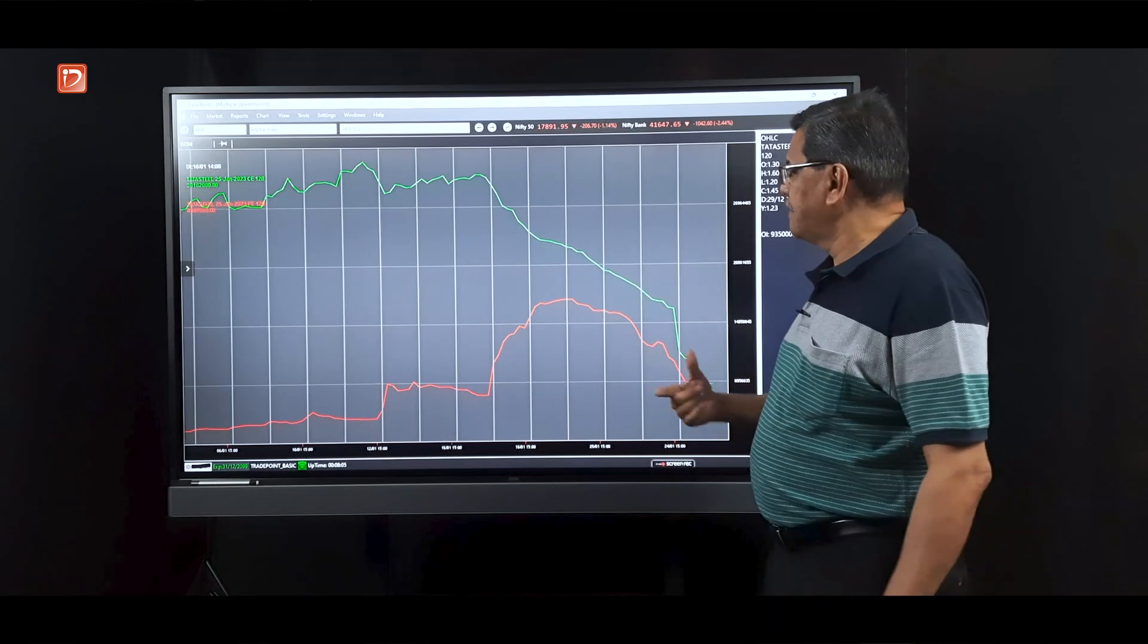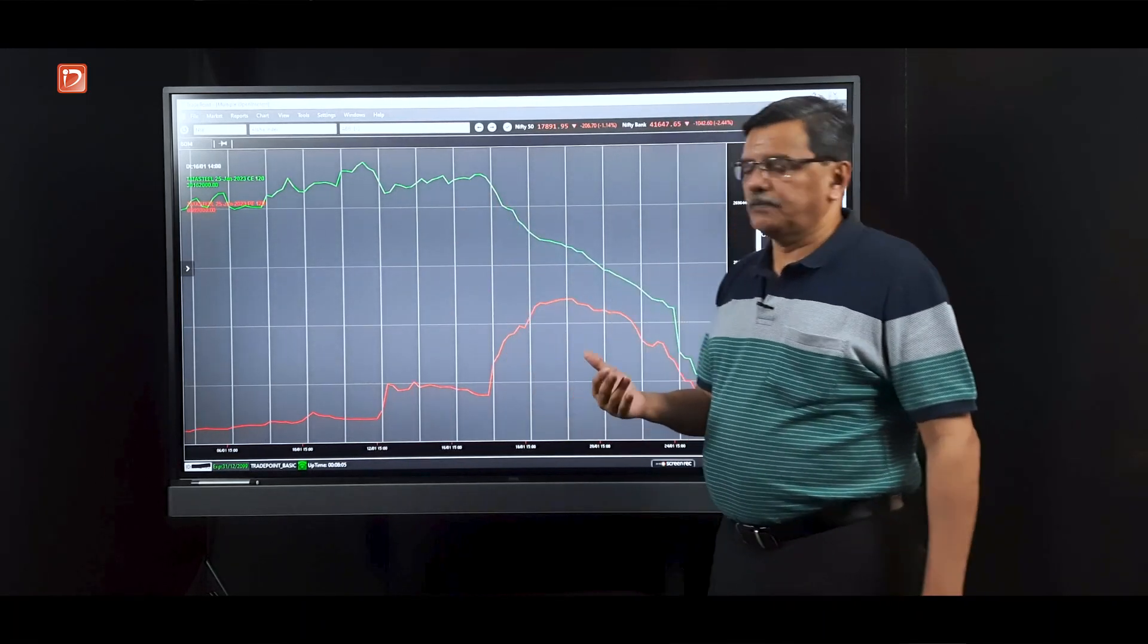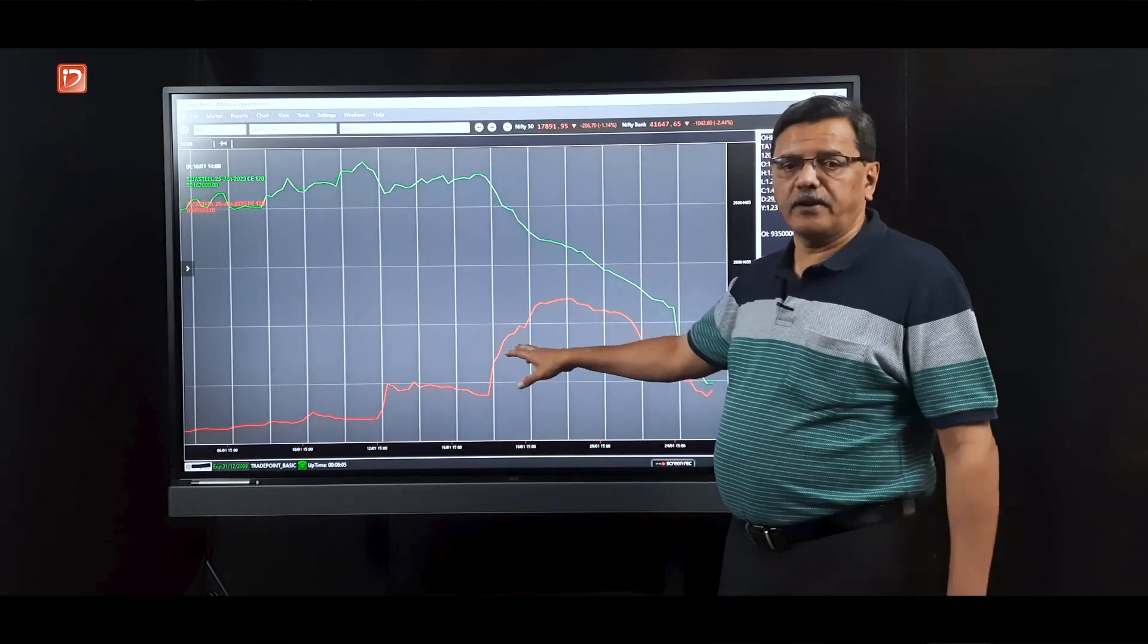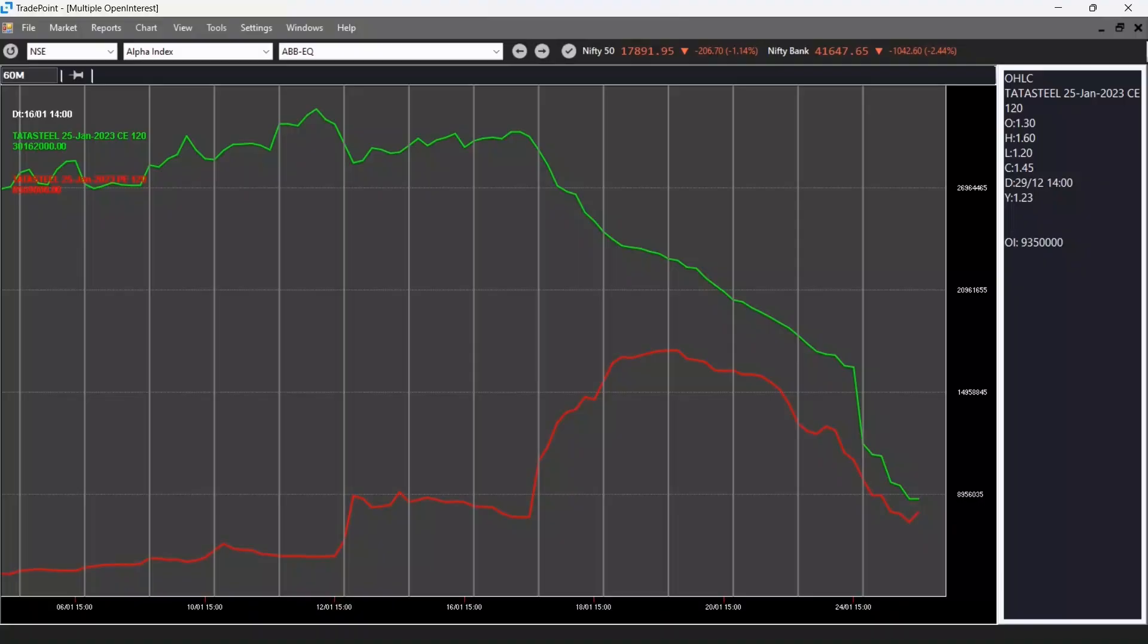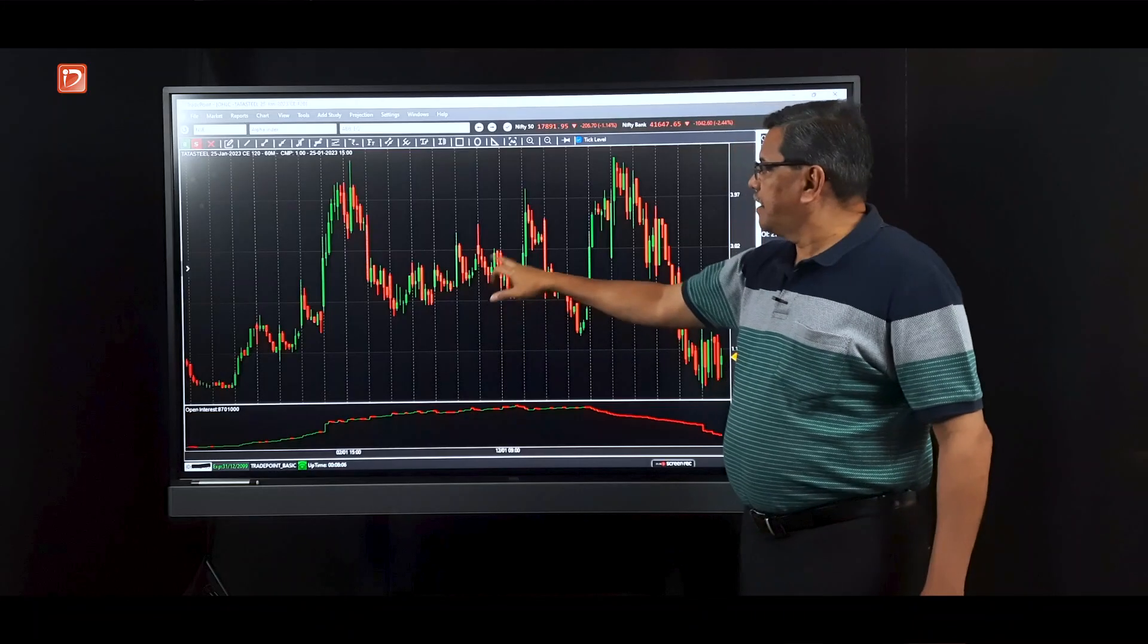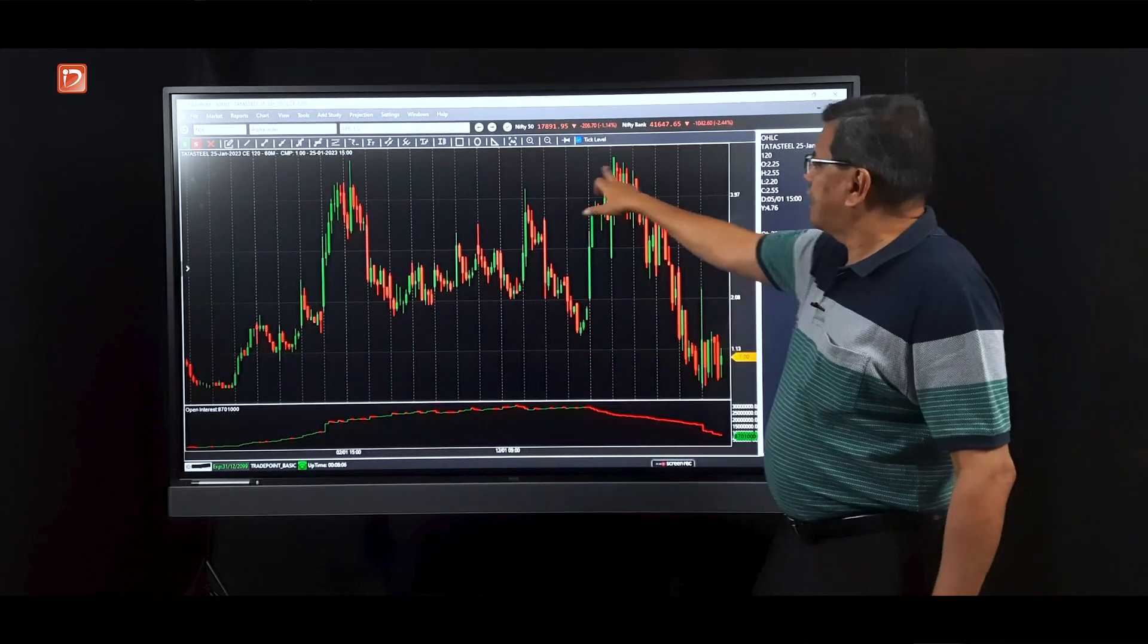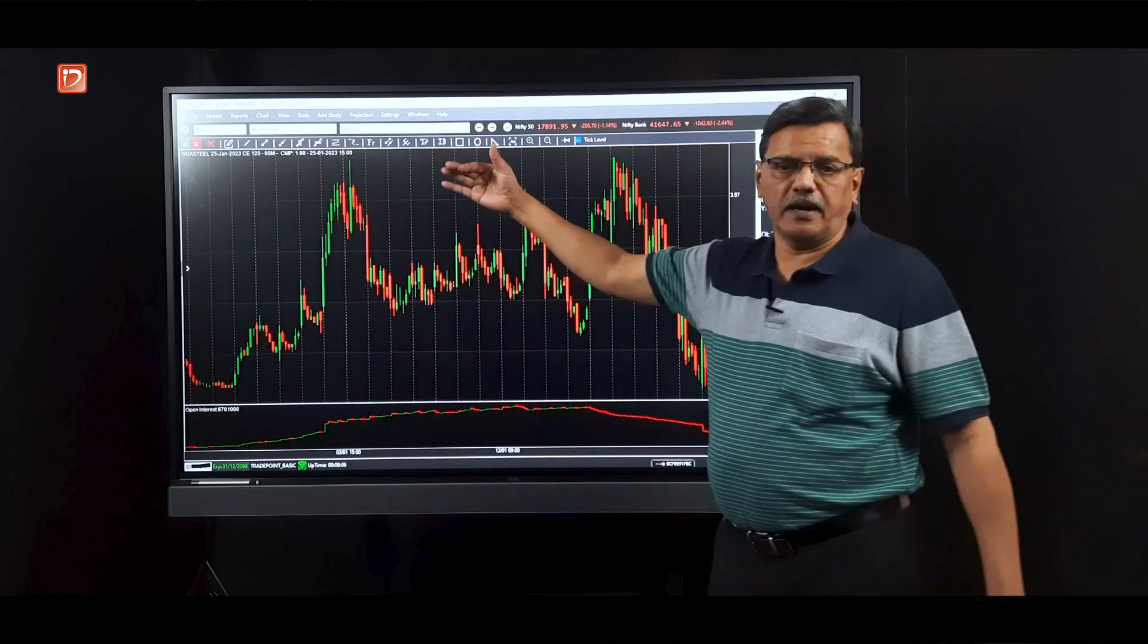We are not talking about one or two rupees here and there, we are talking about a big rise above 120. And the call writers, though they covered, in other words book profit, the put writer was not confident because this red line never went above the green line in the case of Tata Steel. And again, if you look at the chart of the 120 call, from the correction it came all the way down to about 1.7-1.8, went back to this level of 4 or 5, so it did not cross its high.